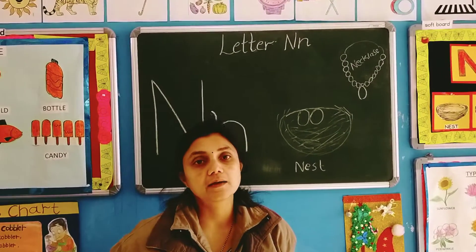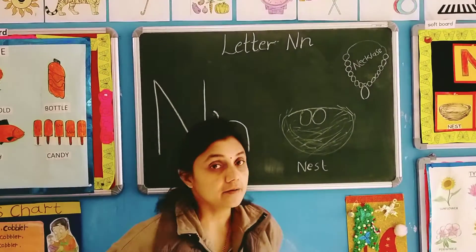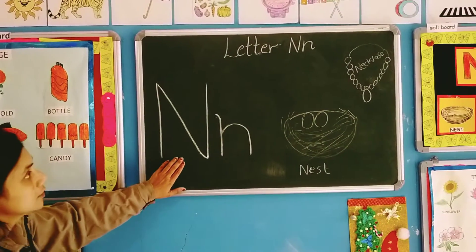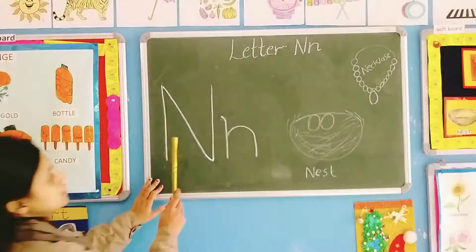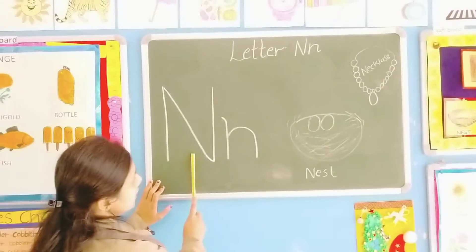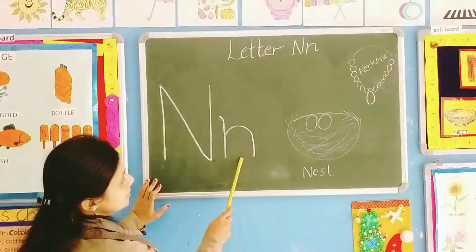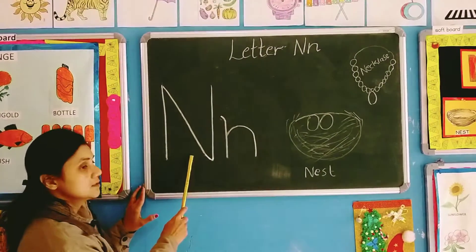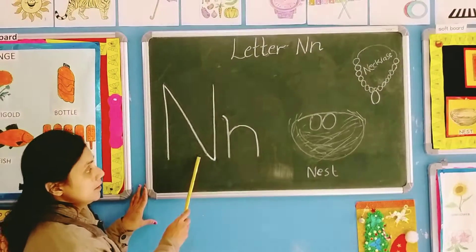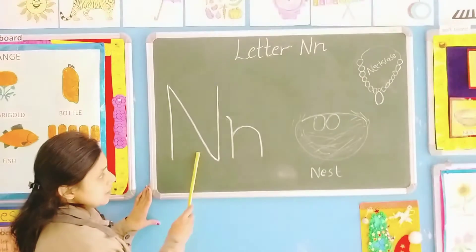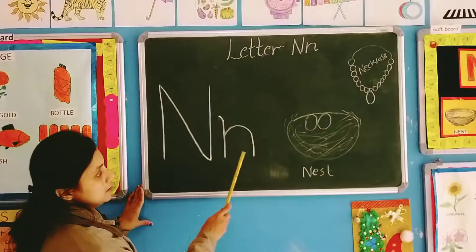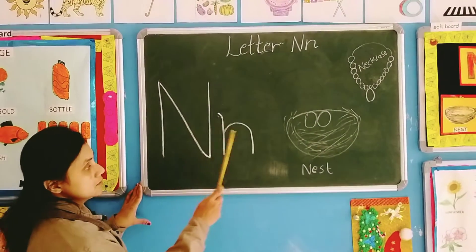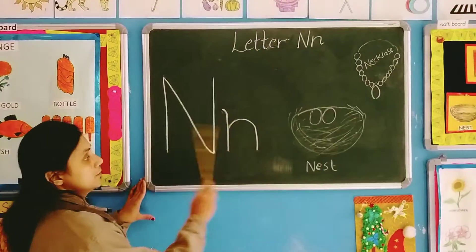Which letter? Letter N. Now look at the book. Can you see here? This is capital N and this is small n. Which letter is this? N. Capital N and small n. Capital N, small n.